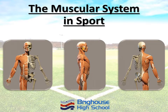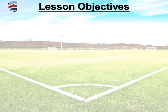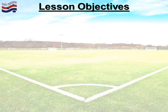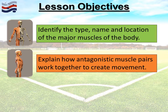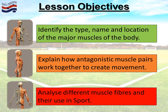Hello Brighouse High School and welcome to this lesson focusing on the muscular system in sport. This lesson is quite complex and a little bit lengthier than previous ones, but it's important that you pay attention throughout because we'd like to achieve three things today: identifying the type, name and location of all major muscles; how muscles work together in antagonistic pairs; and the three muscle fibre types and how they're used effectively in sport.